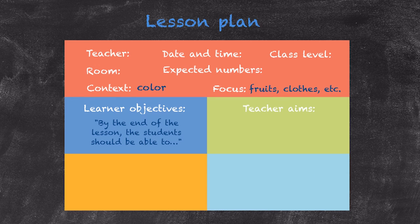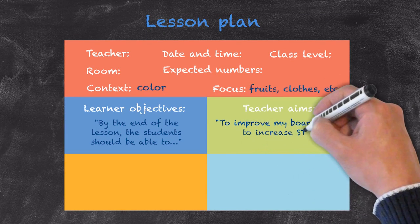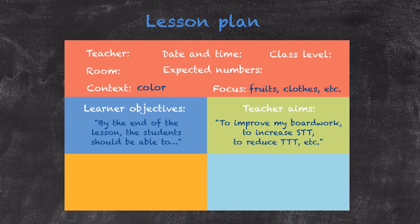The learner objectives are different to the teacher aims. The teacher aims are what you are expecting from that lesson itself. When you first start teaching, a normal aim might simply be to complete the lesson successfully. As you become more experienced, the teacher aims become more specific — for example, to improve your board work, to increase student talk time, and to reduce teacher talk time.